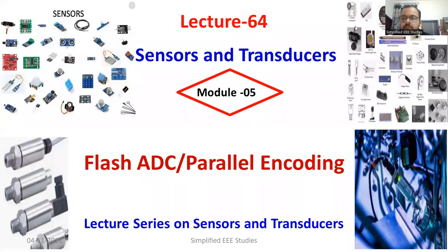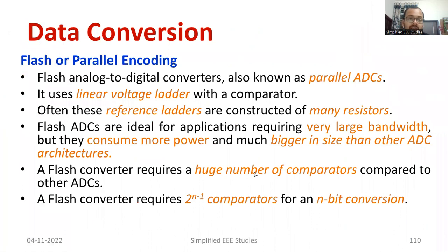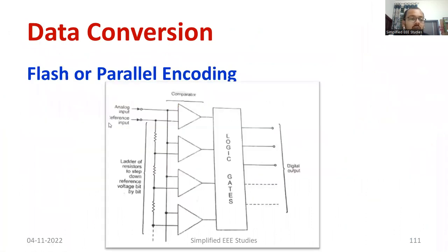Hello and welcome to Simplified EEE Studies. In this session we are going to discuss another type of analog-to-digital converter, namely flash analog-to-digital converter. It is also known as parallel encoding. In the last session we discussed successive approximation analog-to-digital converter technique. So we will discuss what you mean by flash or parallel encoding.